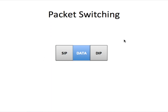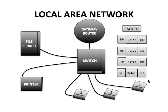A packet has the source IP address, the data, and the destination IP address. Packet switching is how a packet will be transported from the source to the destination. Here we have a local area network sending data from computer number one. Data being sent from any computer is quite large, so it has to be broken up into chunks and placed into packets — in this example, four packets are used.